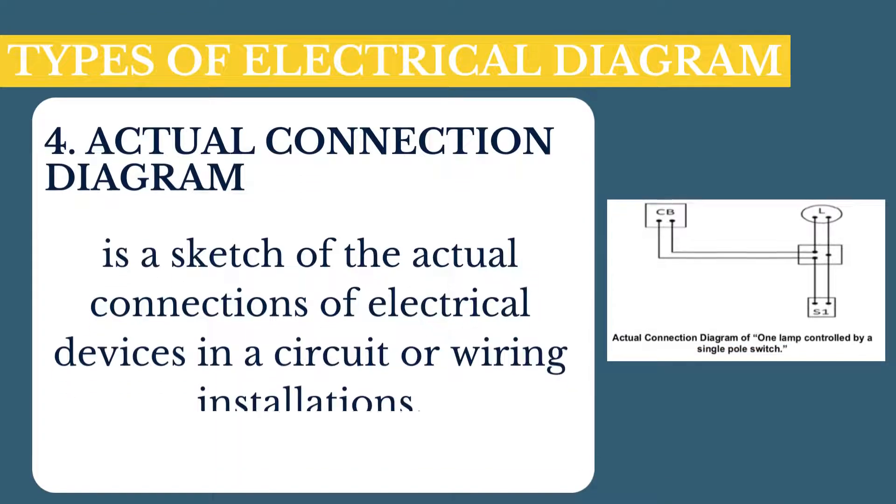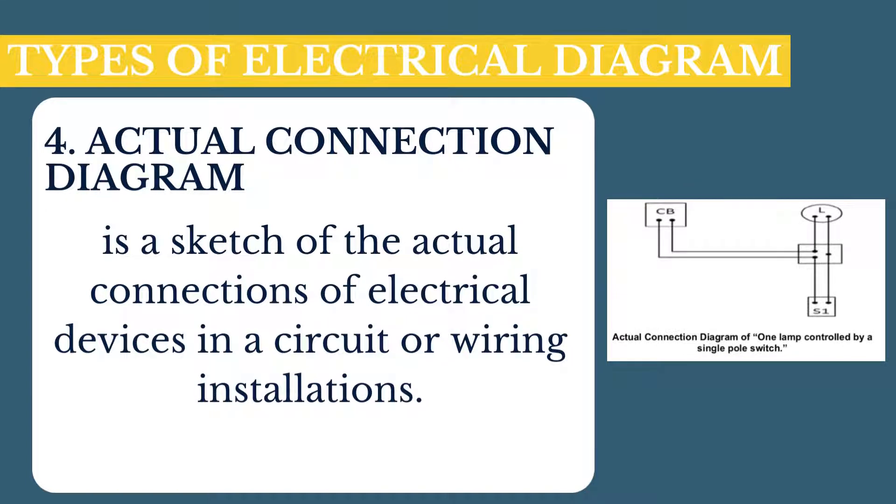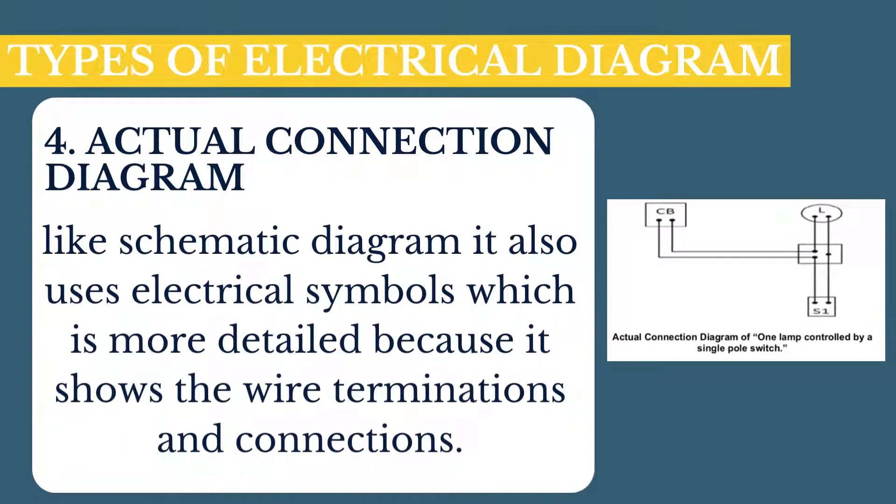Actual connection diagram is a sketch of the actual connections of electrical devices in a circuit or wiring installation. Like schematic diagram, it also uses electrical symbols but is more detailed because it shows the wire terminations and connections.